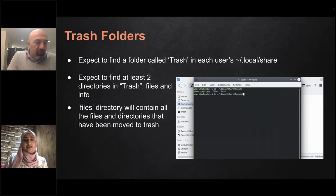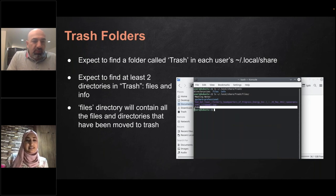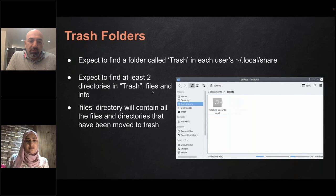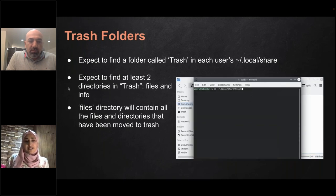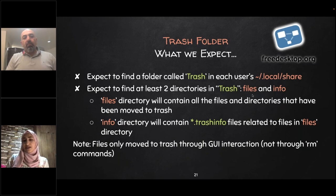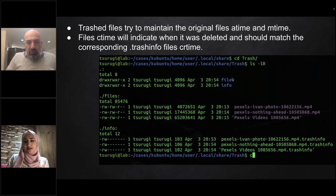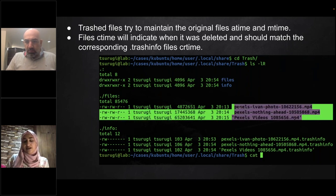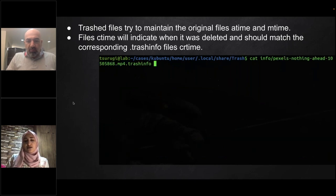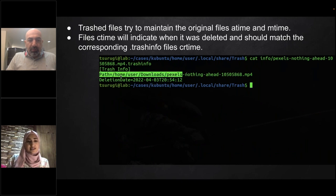Next is the trash folder — the Linux equivalent of the Windows Recycle Bin. When a suspect tries to delete a file, it's moved to the trash. Inside the trash folder there are two subfolders: files and info. The files folder contains the actual deleted files, and the info folder contains metadata about those files. For each deleted file, there is a corresponding info file containing the original path of the file before deletion and the deletion date.